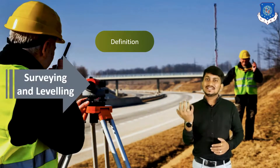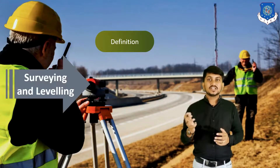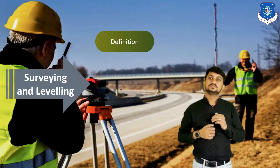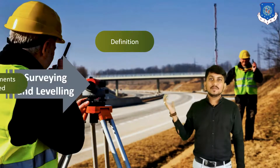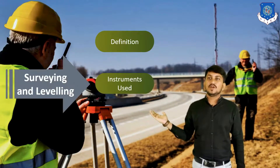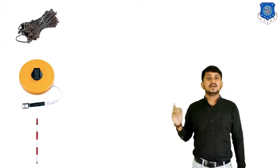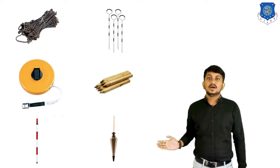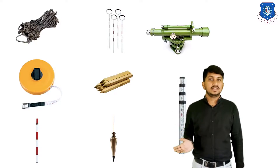What is levelling? It is a branch of surveying that deals with the determination of relative heights of points on the surface of the earth. For that, we first need to understand which instruments we will use in the field. For surveying, we basically need a chain, tape, ranging rod, arrow, pad, and plumb bob. For levelling, we need a dumpy level and levelling staff.